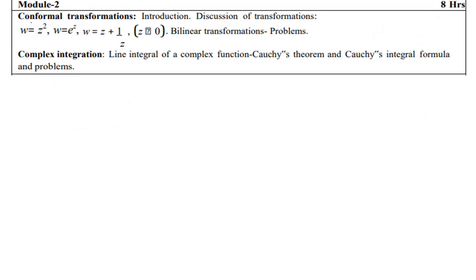Moving on to Module 2, which is of conformal transformation and complex integration. In this module, you can definitely score if you study these three types of conformal transformation. One problem will be there on conformal transformation worth 7 marks — compulsory 7 marks will be there from conformal transformation. If you study these three conformal transformations, definitely one problem will be there in either of the two choices, so you can have 7 marks there.